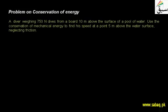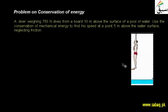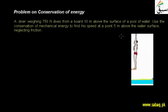I will show you a diagram. Here we have a diver's diagram. There is a wooden block — it is the diving board — and the diver is standing on it. The yellow line represents the surface of the pool, which is the surface of the water. The height of the diver above the surface is 10 meters.